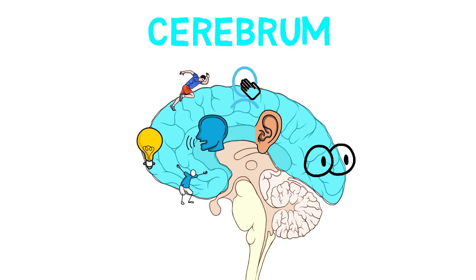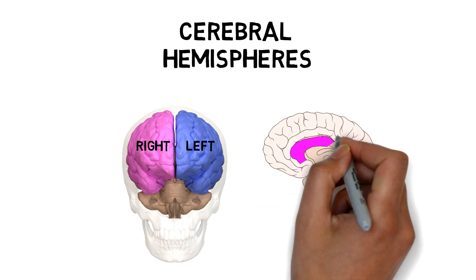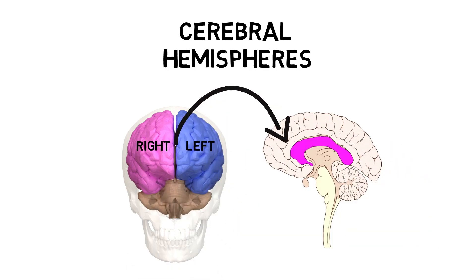Everything shown so far is from the side of the brain, but if you flip the brain 90 degrees and look at it from the front, you can see that the brain actually consists of two halves called the cerebral hemispheres — a right and a left hemisphere. They're connected by this mass of nerves called the corpus callosum. There is a tendency in the brain for lateralisation: we put some things on the left side, like mathematical reasoning and language, and other functions on the right side, like face recognition.